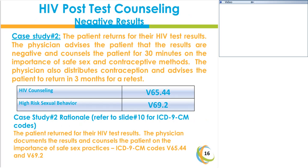Case Study 2: HIV post-test counseling with negative results. The patient returns for HIV test results. The physician advises the patient that the results are negative and counsels the patient on the importance of safe sex and various contraceptive methods. The physician distributes contraception and advises the patient to return in three months for a retest. In this instance, only two codes are needed: V65.44 (HIV counseling) and V69.2 (high-risk sexual behavior).